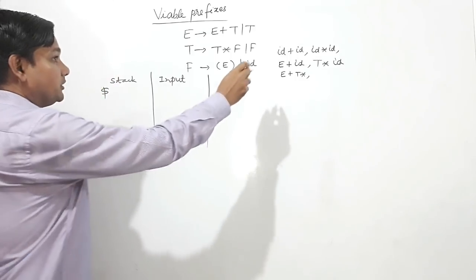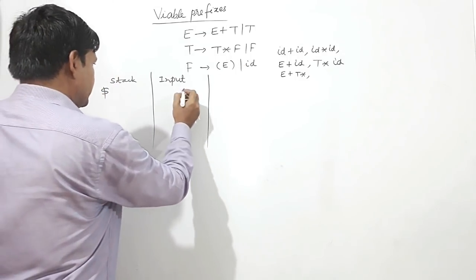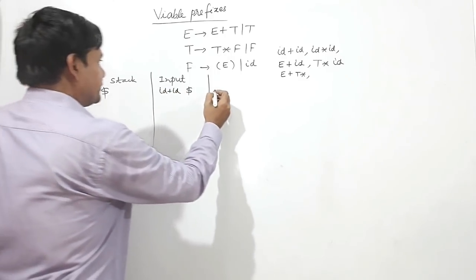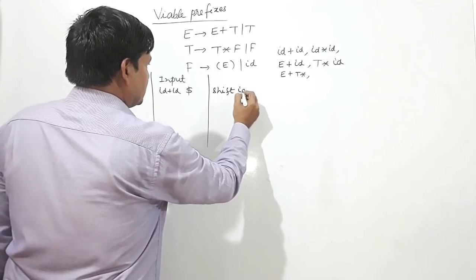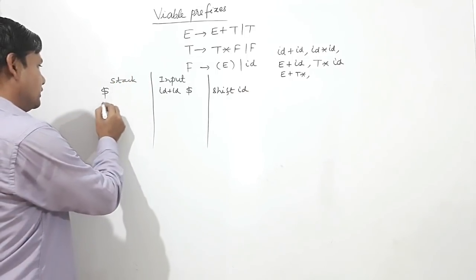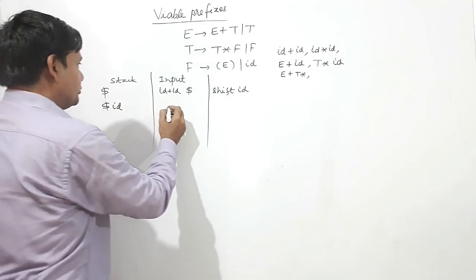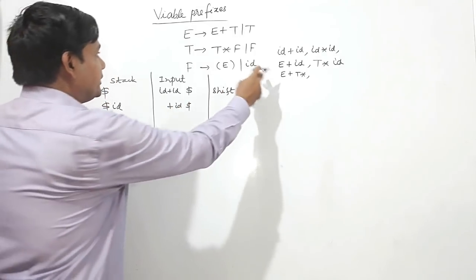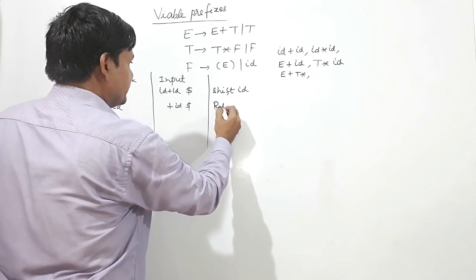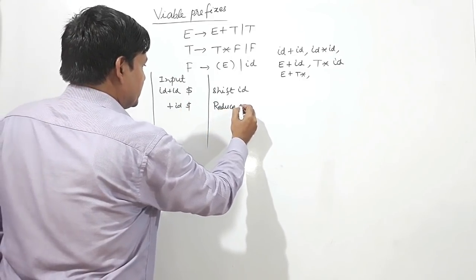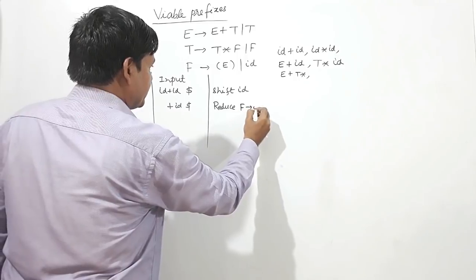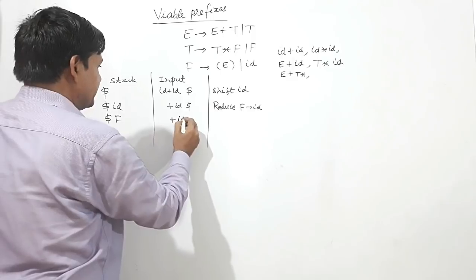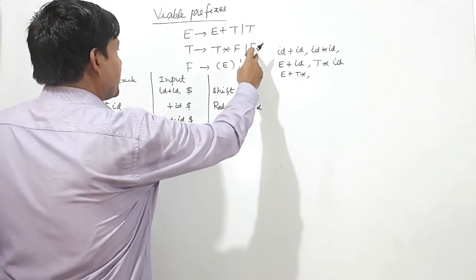Input is ID plus ID. I will shift ID onto the stack, so dollar ID is here, plus ID dollar. Now ID can be reduced to F, so reduce ID by F — I'm getting dollar F here, plus ID dollar.